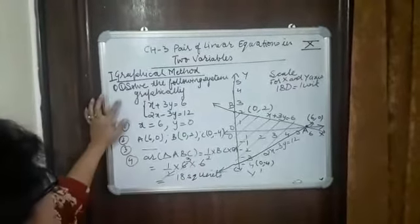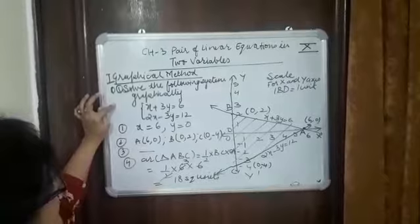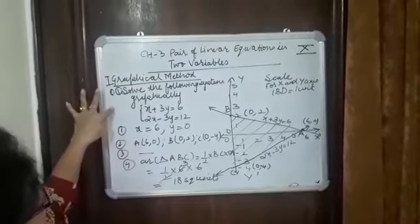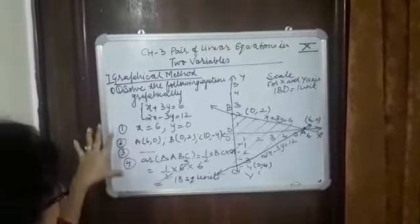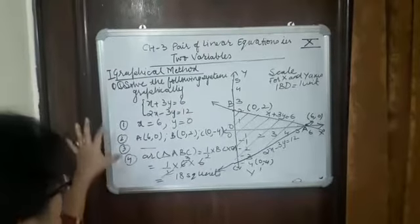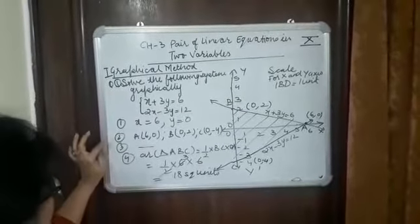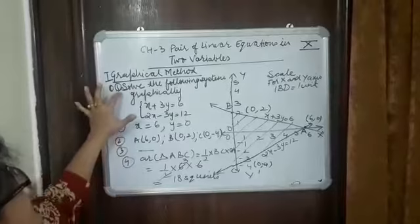Generally, the question comes like this: solve the following system of equations graphically, and after that you have certain other parts. So it could be one of these three parts: second, third, or fourth. First part is always there, solution.